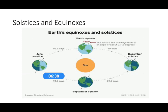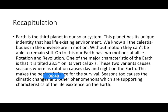Now we have to go for the recapitulation. Earth is the third planet in our solar system. This planet has its unique identity - it has life existing in its environment. We know all the celestial bodies in the universe are in motion. Without motion, they can't remain still. Our earth has two motions at all.